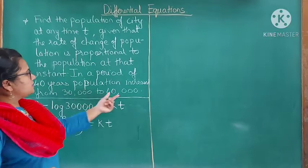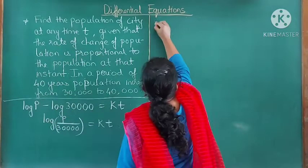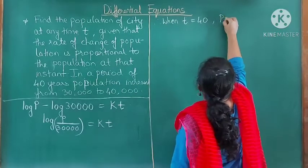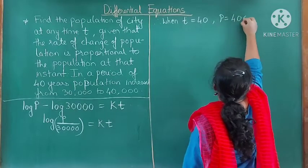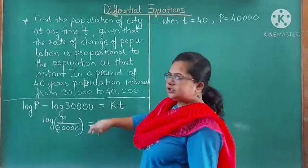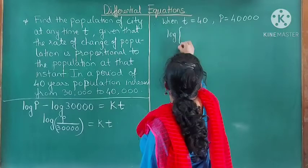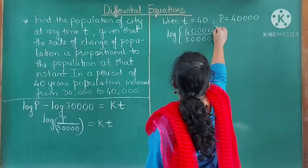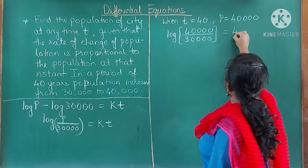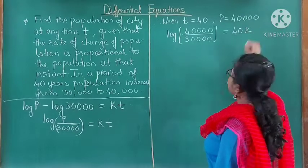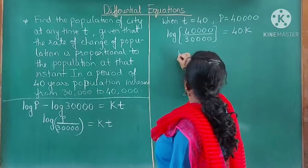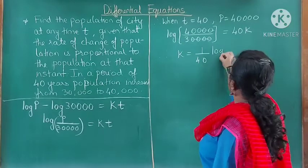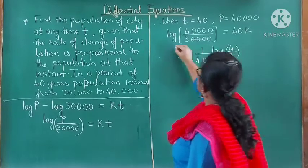Next, in 40 years the population becomes 40,000. Therefore, when t = 40, P = 40,000. We substitute here: log(40,000/30,000) = 40k. Therefore k = (1/40)·log(4/3). So we now have both C and k.